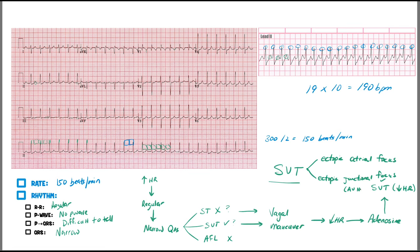In this video, we talked about supraventricular tachycardia — including paroxysmal atrial tachycardia and paroxysmal junctional tachycardia, which are difficult to distinguish and grouped together as SVT. We also talked about Wolf-Parkinson-White syndrome, also referred to as AVRT (atrioventricular reentrant tachycardia), a specific type of SVT. If you found this helpful, please like, comment, subscribe, and check out our Facebook, Instagram, and Patreon. Thank you for being such great ninja nerds!